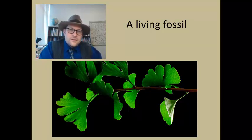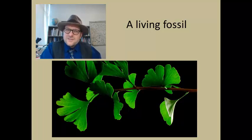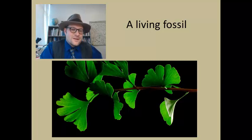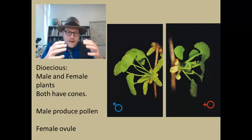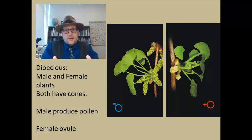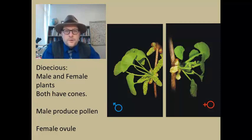What fascinates people most about ginkgos is that it resembles a conifer in some ways, but with these strange broad leaves that don't look like any leaves of any other tree we know of. Like many gymnosperms, the ginkgo is dioecious — it has both male and female plants, which both have cones. The males produce the pollen, and the females have the ovia and produce the seeds.